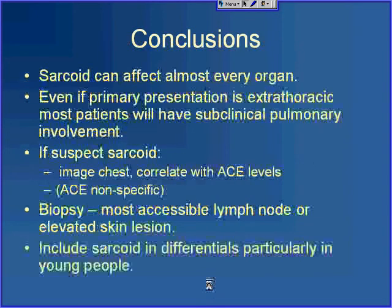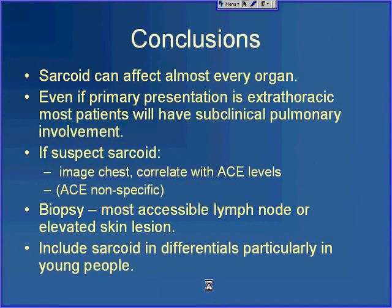In conclusion, sarcoid can affect almost every organ, and even if the primary presentation is extrathoracic, most patients will have at minimum subclinical pulmonary involvement. If you suspect sarcoid on bone or liver imaging, image the chest for subclinical pulmonary involvement and correlate with angiotensin-converting enzyme levels, keeping in mind that ACE is non-specific and can even be elevated in lymphoma. If still unsure, biopsy may be needed — ideally the most accessible lymph node or skin lesion. Include sarcoid in differentials, lower down the list, particularly in young patients.